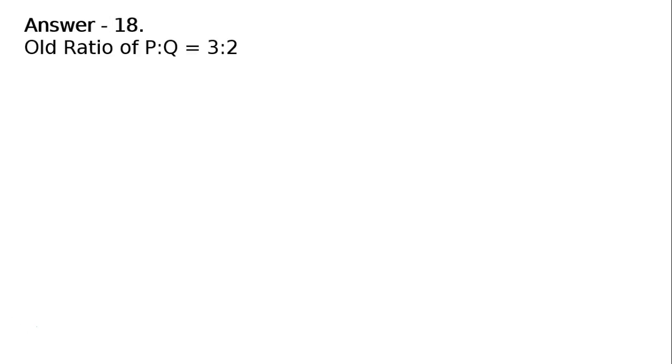Old ratio of P is to Q is equal to 3 is to 2. P's new share: 3/5 minus 1/25. Why 1/25?